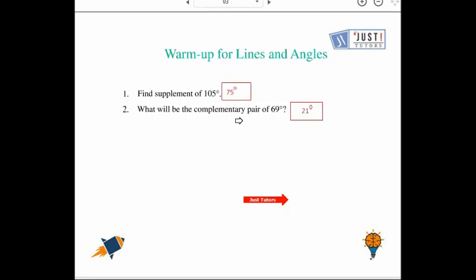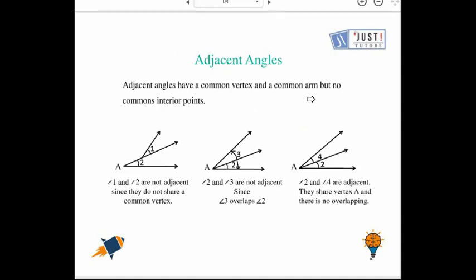Congratulations if both of your answers are correct. Let's go ahead and read about adjacent angles. If you talk about adjacent angles, there will be a common vertex, a common corner, a common arm, but no common interior points.